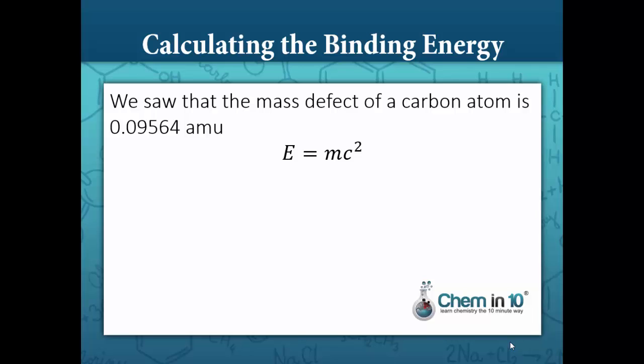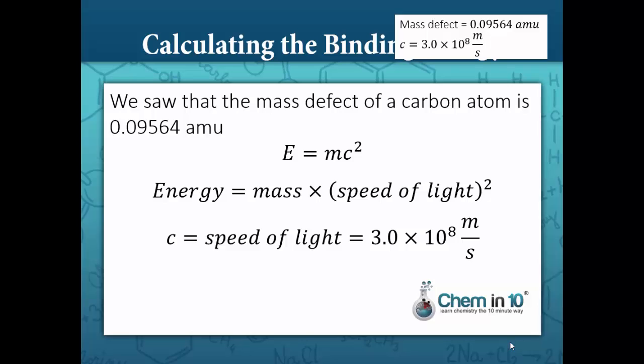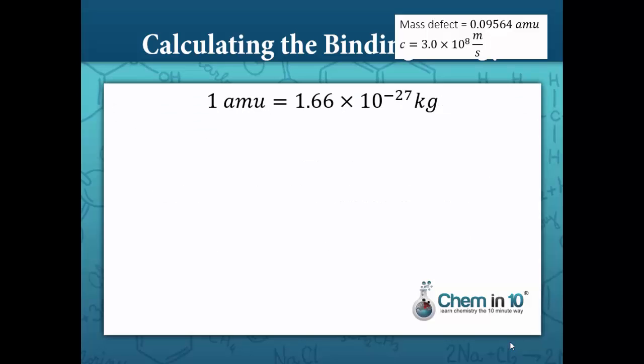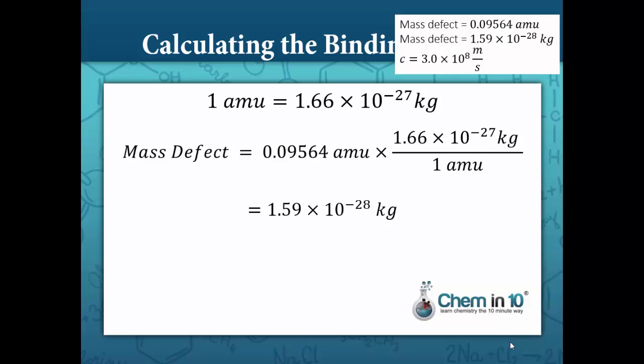So let's calculate how much binding energy we get out of our mass defect of 0.09564 AMU. We'll use the equation E equals MC squared, where E equals energy, M equals mass, and C squared is equal to the speed of light, 3 times 10 to the 8th meters per second, squared. Our conversion factor is that 1 AMU is equivalent to 1.66 times 10 to the negative 27 kilograms. We multiply our mass defect, 0.09564 AMUs, by 1.66 times 10 to the negative 27 kilograms per AMU to get a mass defect in kilograms of 1.59 times 10 to the negative 28 kilograms.